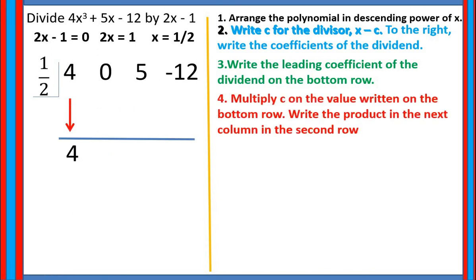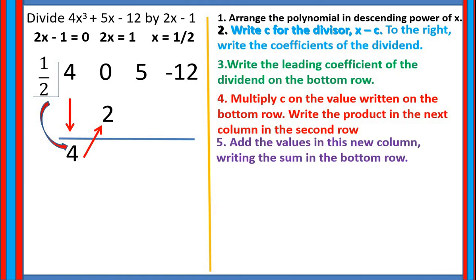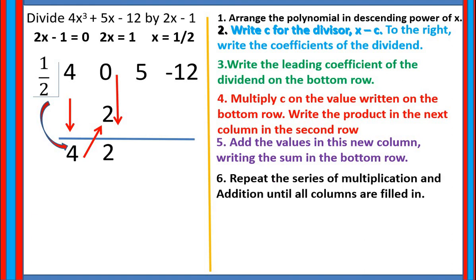Next, multiply c by the value on the bottom row: 1 half times 4 equals 2. Adding the next column: 0 plus 2 equals 2. Then repeat: 2 times 1 half equals 1, written in the next column. Adding 5 plus 1 gives 6. Then 6 times 1 half equals 3. Finally, negative 12 plus 3 equals negative 9.